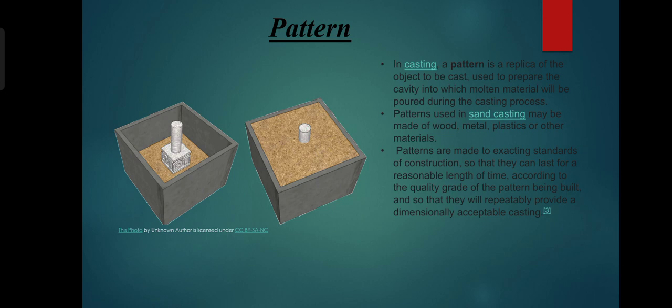Patterns used in casting may be made of wood, metal, plastics or other materials. Patterns are made to exacting standards of construction so that they can last for a reasonable length of time, according to the quality grade, and so that they will repeatedly provide a dimensionally acceptable casting.